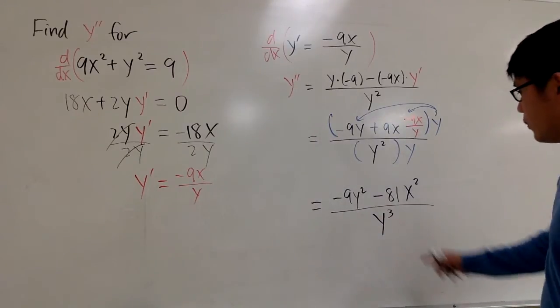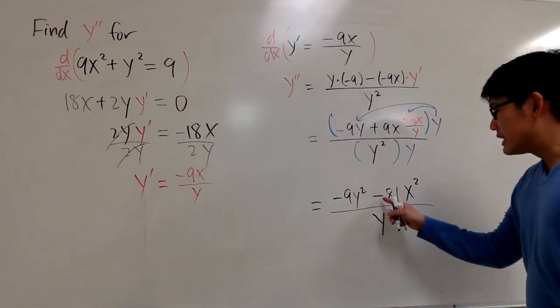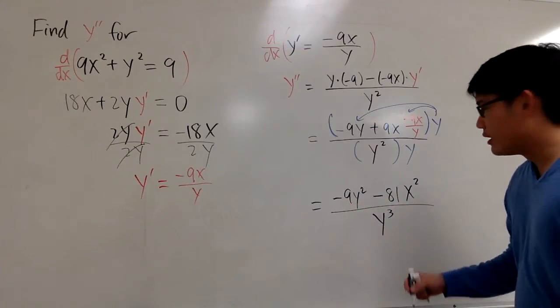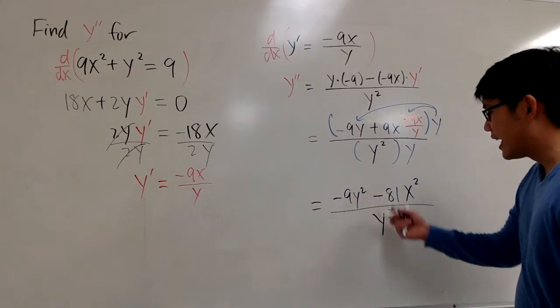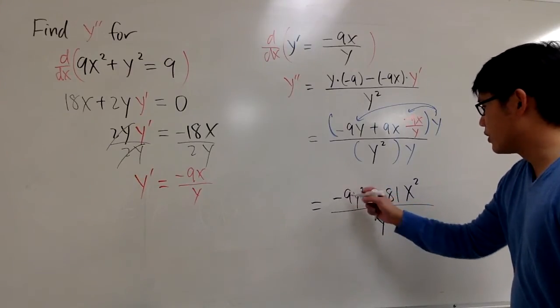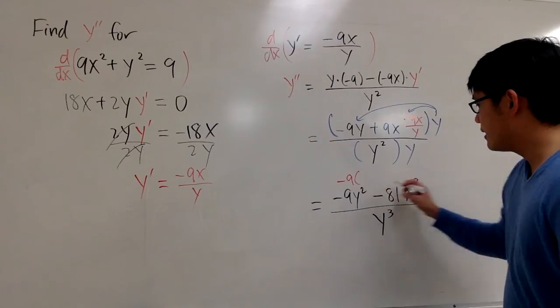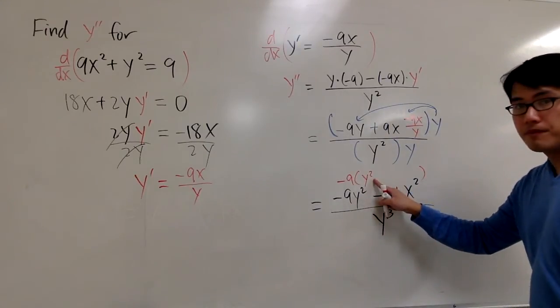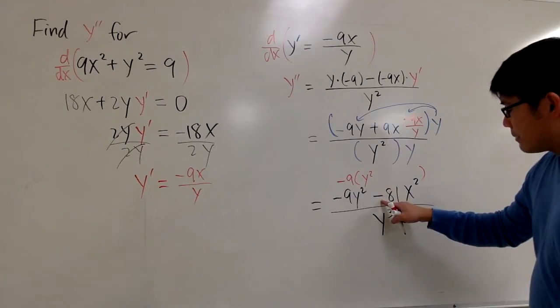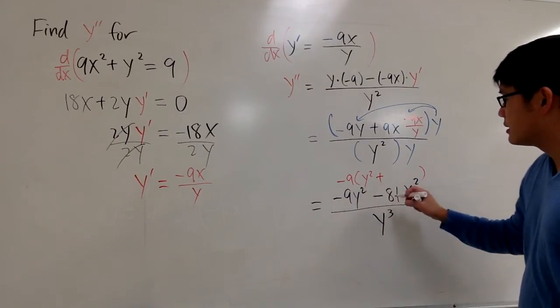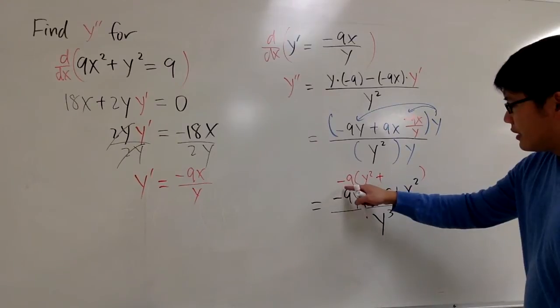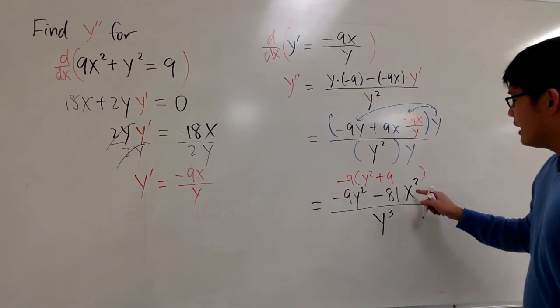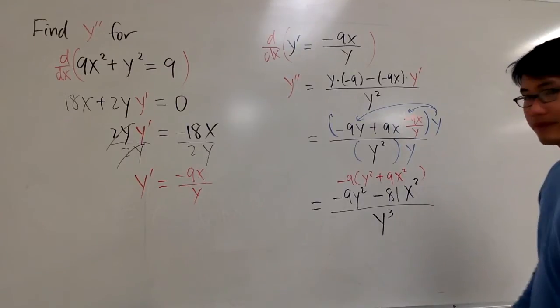What can we do on top? Well, take a look. Both of these have negative. And both of these have 9. 81 has a factor of 9. So I can factor out a negative 9. I will do that. So I'll put this right here. Negative 9. And here, I will end up with y². Originally, I had a minus. But I factor out a negative, so it becomes a plus. I factor out a 9. So the 81 becomes a 9. And then the x² is still the x².